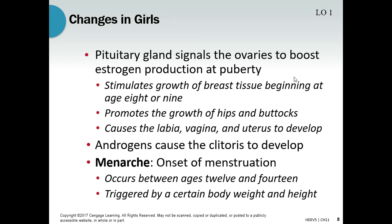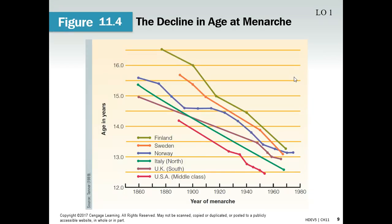Usually the first sign we notice that a girl has begun puberty is called menarche, because it marks the beginning of menstruation — where the girl begins to have a period. As mentioned, this is triggered by certain body weight and height. Once the hypothalamus notices this, it tells the pituitary gland to signal the ovaries. Over the years, there has been a documented decline in the age of menarche.